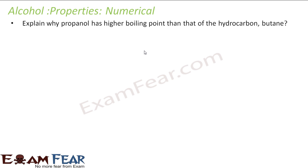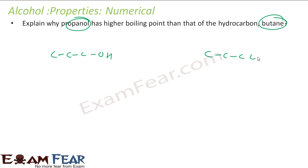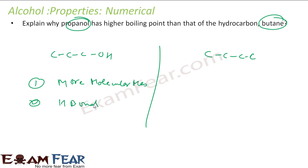The next question is: why does propanol have a higher boiling point than butane? Propanol has more molecular mass than butane, and propanol also has hydrogen bonding. Both conditions favor propanol having a higher boiling point. So both molecular mass and hydrogen bonding together give propanol a higher boiling point than butane.